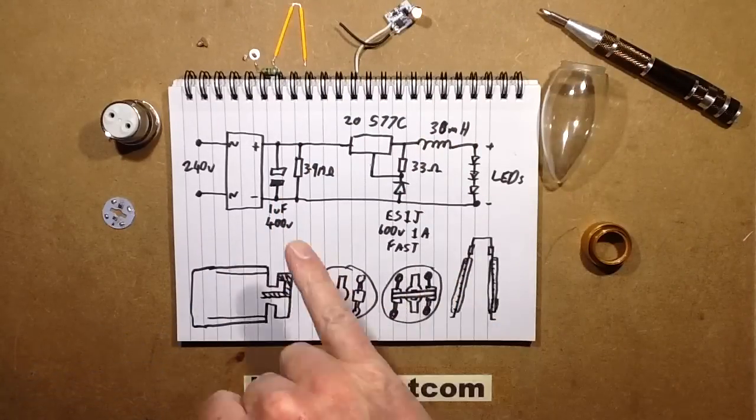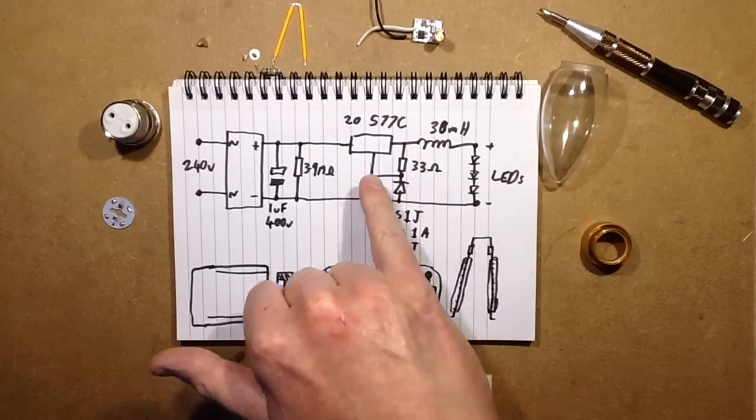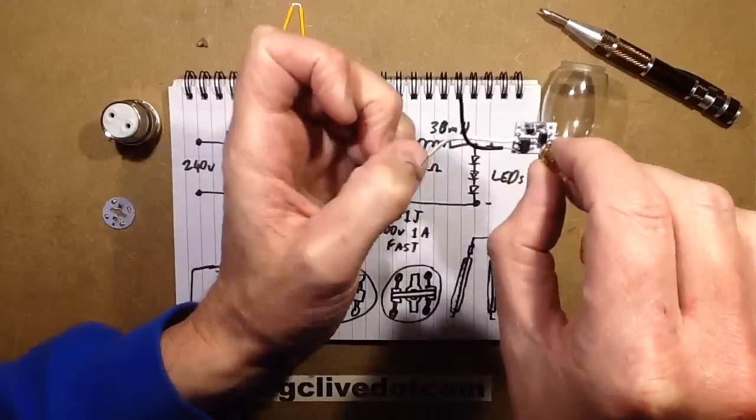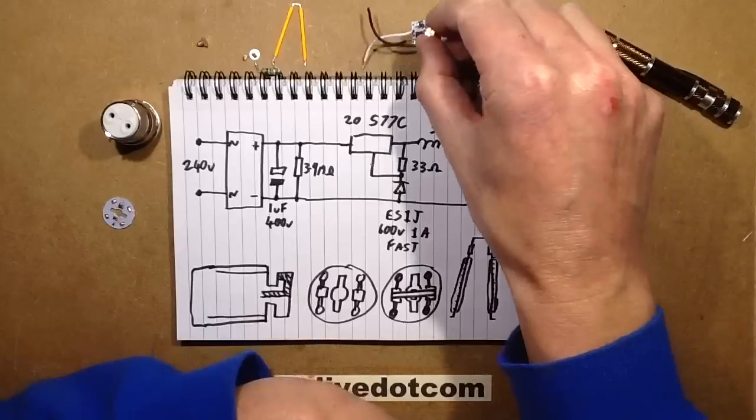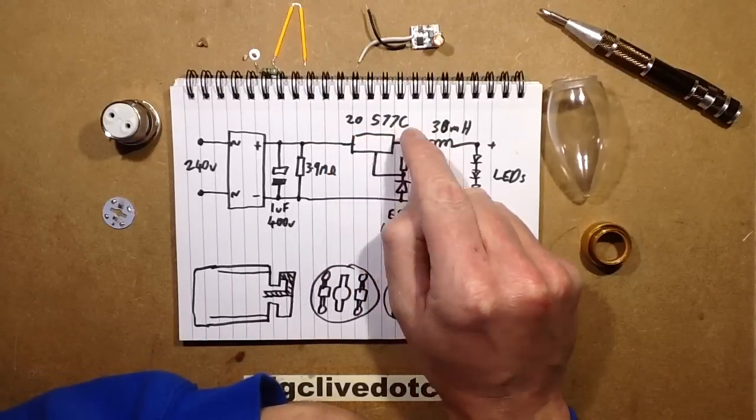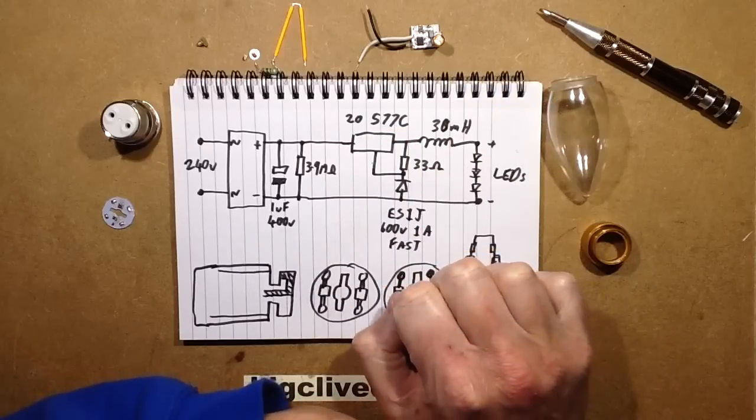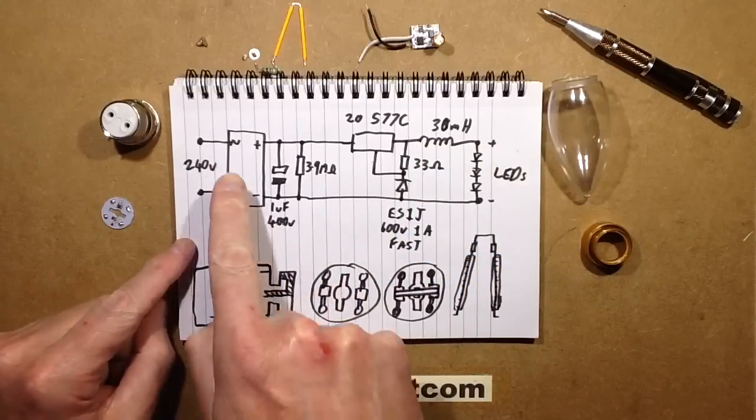So the circuitry on the circuit board is quite interesting. It's all based around a tiny little surface mount transistory type package, but it's clearly got a complex buck regulator in it. The number on it was 20577C. Couldn't find anything on the internet. Maybe you guys can look better, but I couldn't find anything.